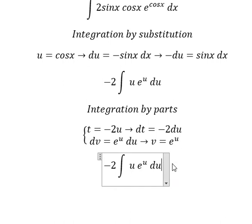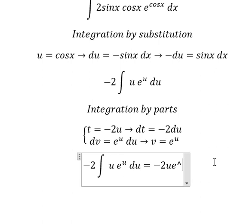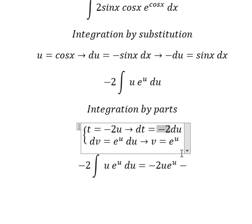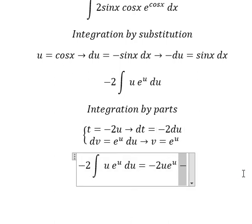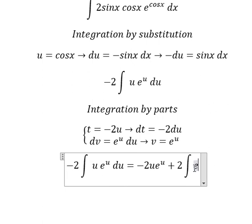So, we have t multiplied by v minus dt multiplied by v. Negative 2 and negative sign give us positive 2, and we have the integral of e to the power of u.